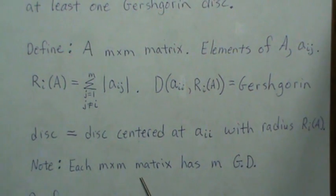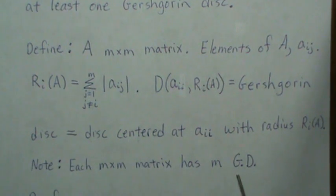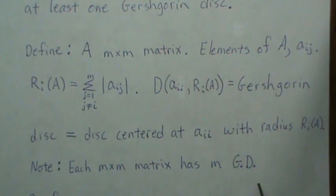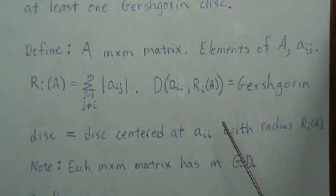Each m by m matrix has m of these Gershgorin disks, and so the union of all these disks will contain all of the eigenvalues.